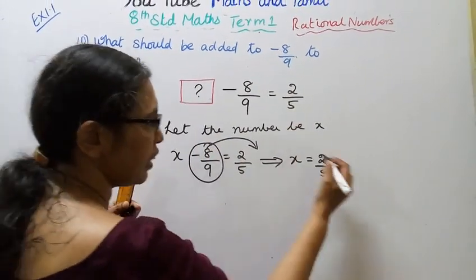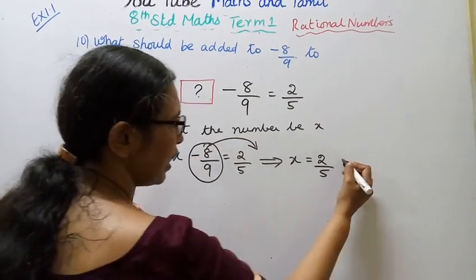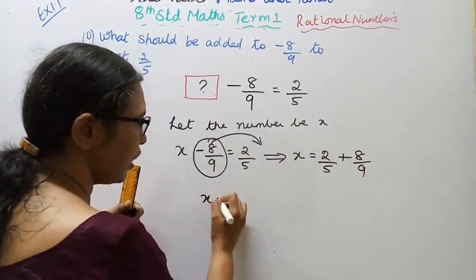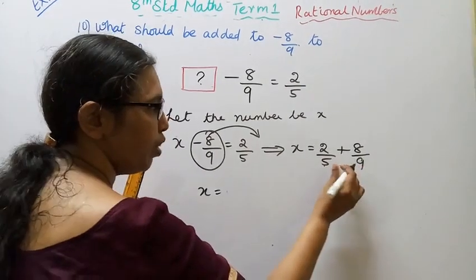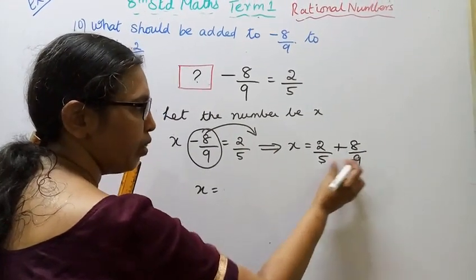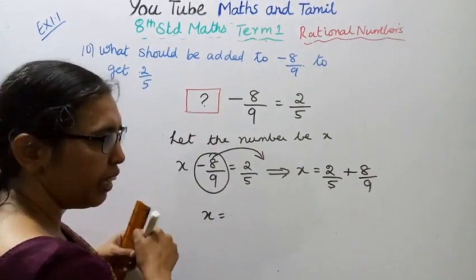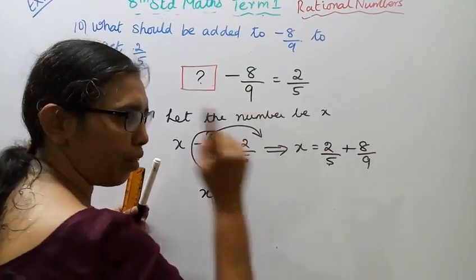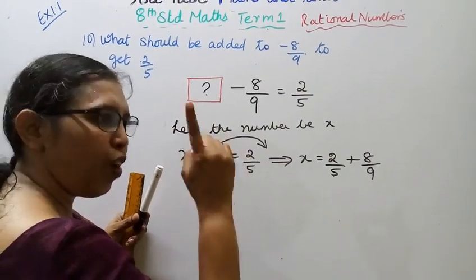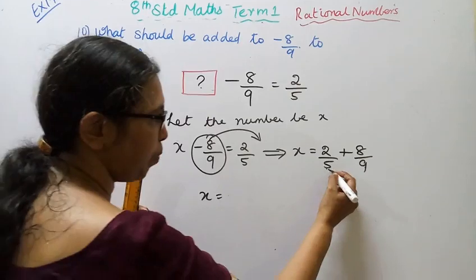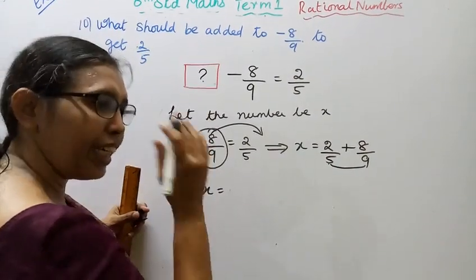x plus minus 8 by 9 equals 2 by 5. Moving to the other side, minus becomes plus, so x equals 2 by 5 plus 8 by 9. To find the LCM of 5 and 9, it's 45. I will multiply.